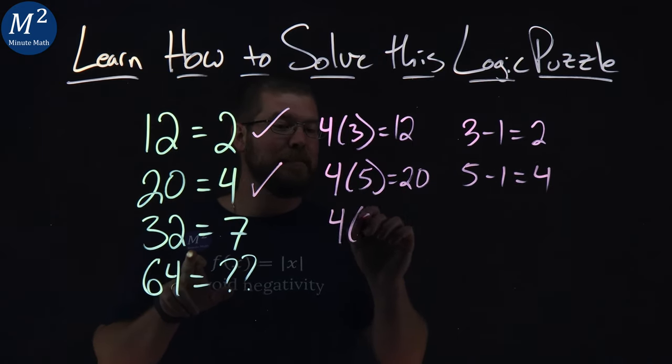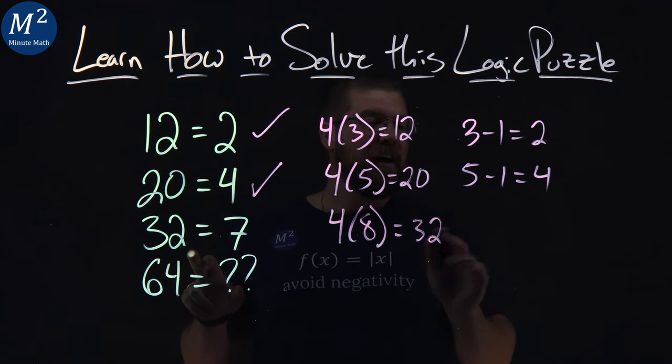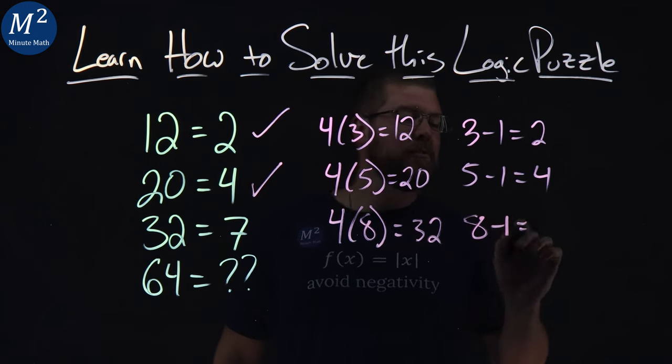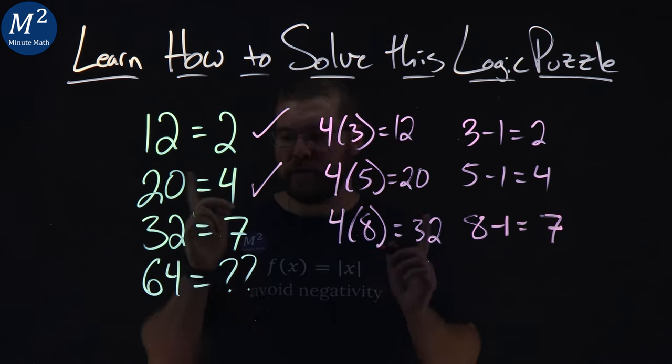32 is 4 times 8. 4 times 8, 32, like I said. Take the 8, we subtract 1 to it. What do we get? 7. Easy, folks. Too easy.